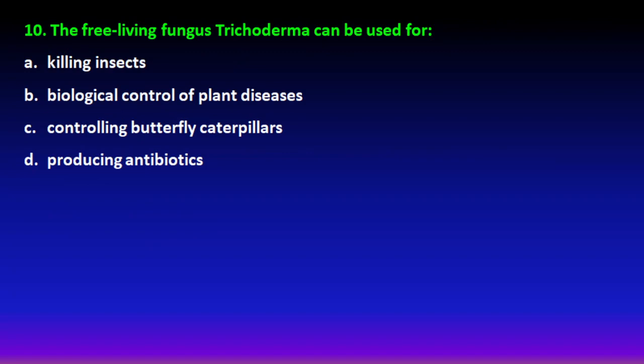Next question: the free-living fungus Trichoderma can be used for — killing butterflies/caterpillars, biological control of plant diseases, or producing antibodies? The answer is simple: Trichoderma is a fungus used in the biological control of plant diseases. So option B (biological control of plant diseases) is the right answer.